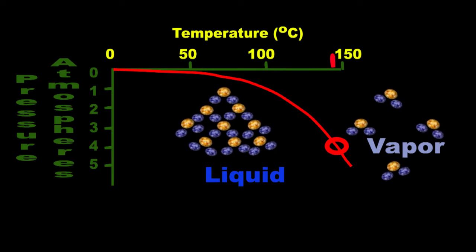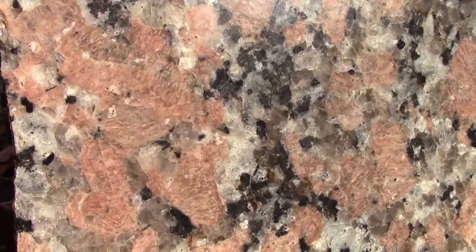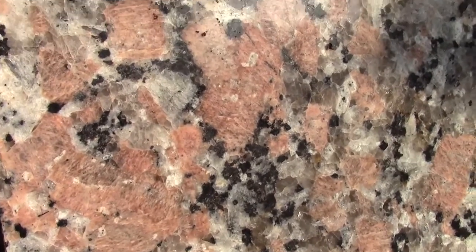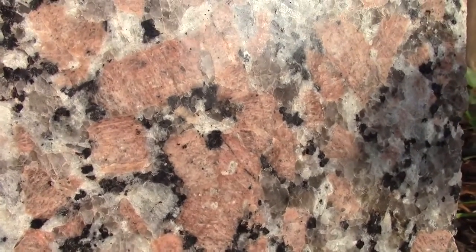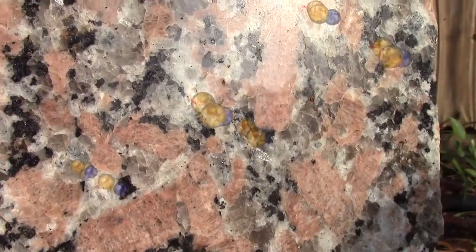The phases in the phase rule refer to not only solid versus liquid versus vapor, but also the variety of individual minerals involved. In a granite, quartz would be one phase, biotite another, and k-spar a third. If water were present in the granite, that would be a fourth phase.